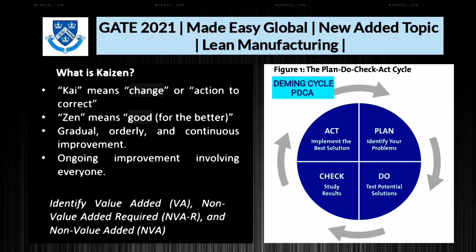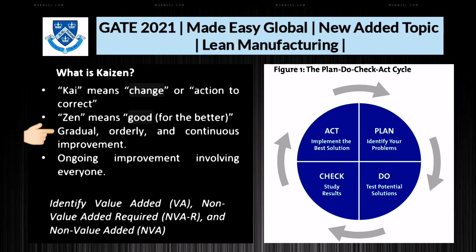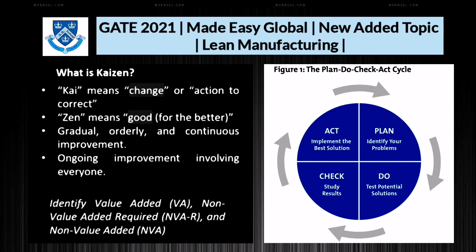In the PDCA cycle: Act means implement the best solution; Plan means identify your problems; Do means test potential solutions; and Check means study results. This Deming cycle is very important. In general, Kaizen is used for gradual, orderly, and continuous improvement, and it is one of the most important tools of lean manufacturing.